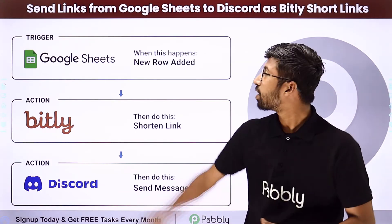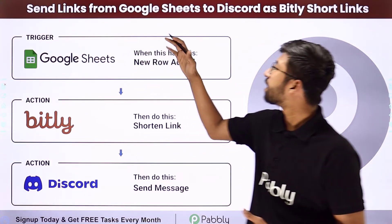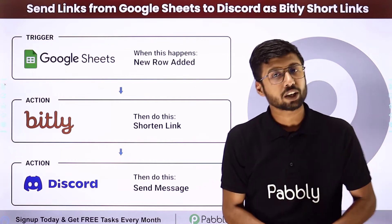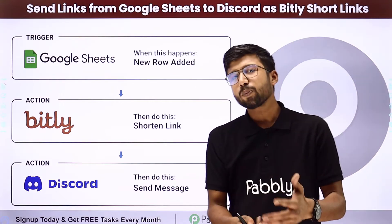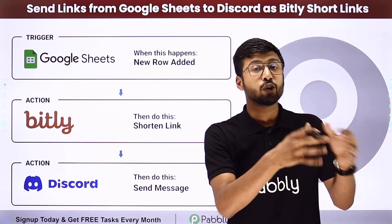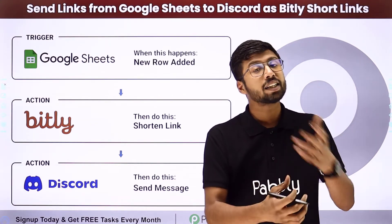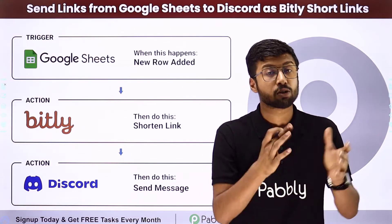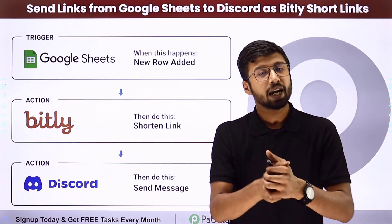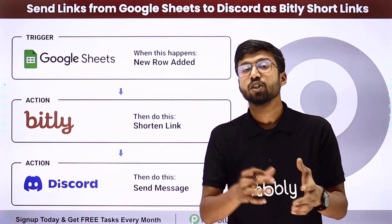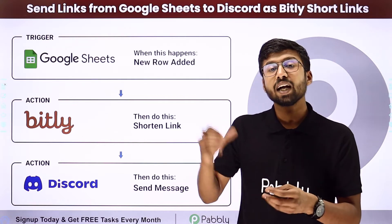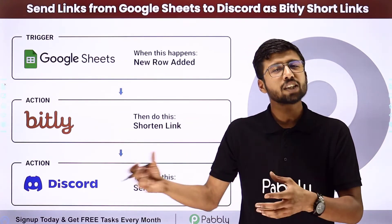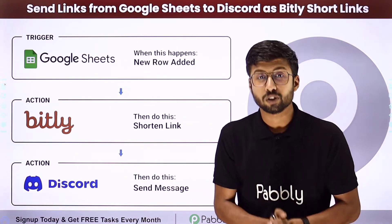In this video, we are going to learn how to send links from Google Sheets to Discord as a Bitly short link. Suppose you are adding some kind of data into your Google Sheet, and in that data you are also adding some long links, long URLs, and you want to shorten those URLs using Bitly and send those URLs and content from the Google Sheet as a message on your Discord channel.